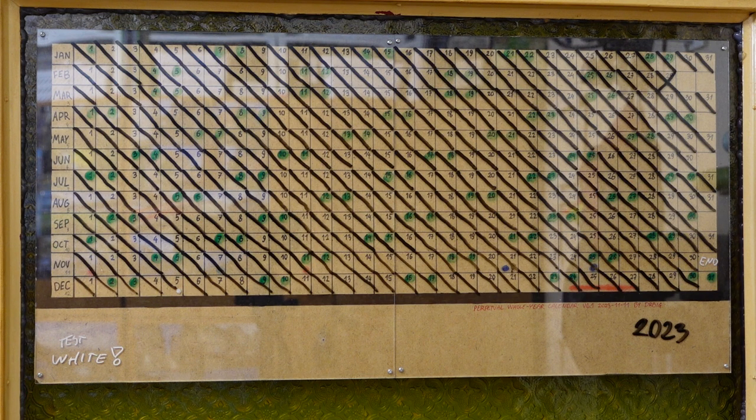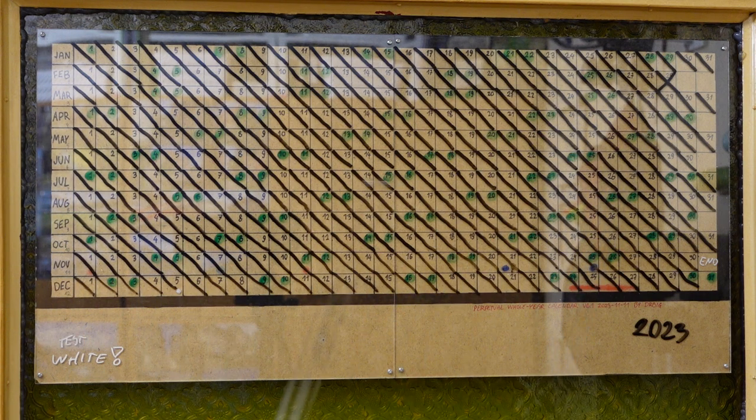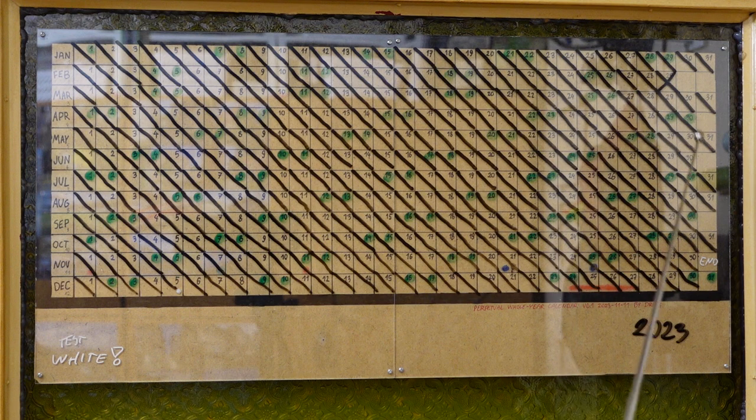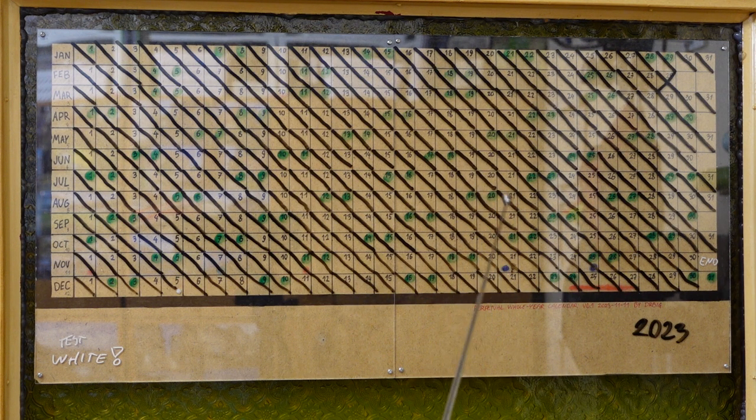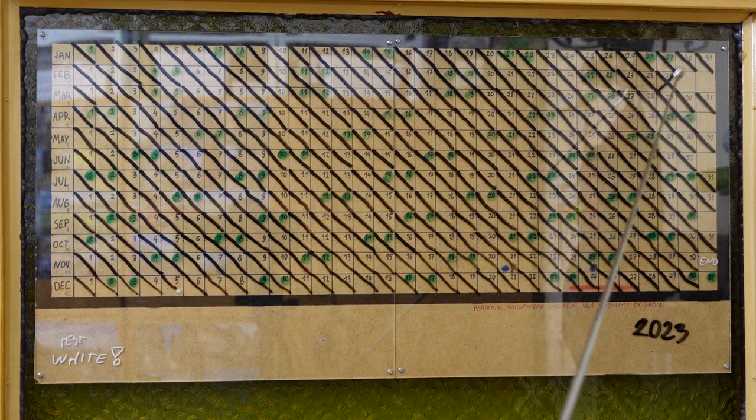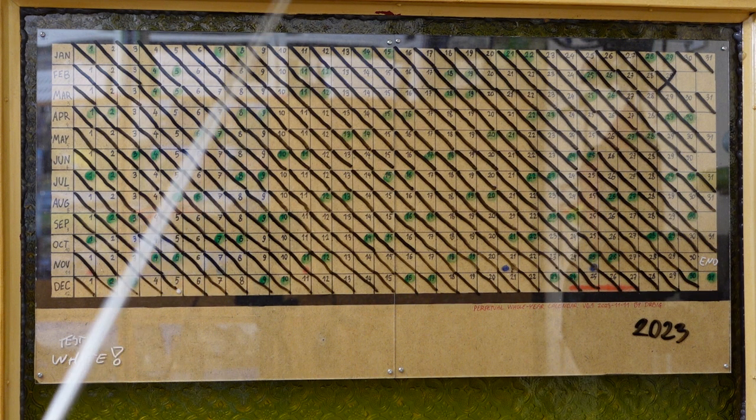The perpetual aspect is strongly connected with the dry erase. Basically the backboard has just the matrix for the calendar, including all the possible days. Then if you want to make it 2023, you just mark the weekends and delete the 29th of February.